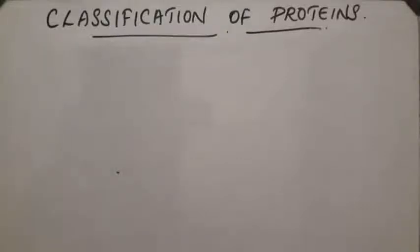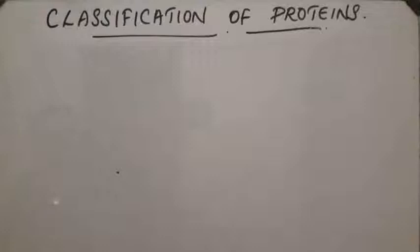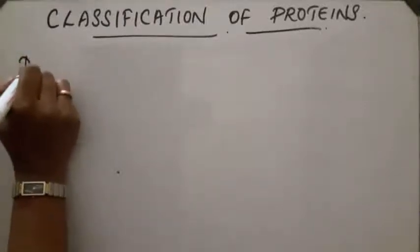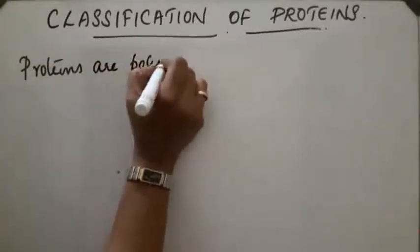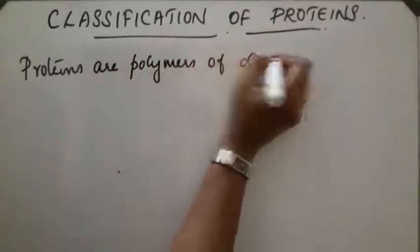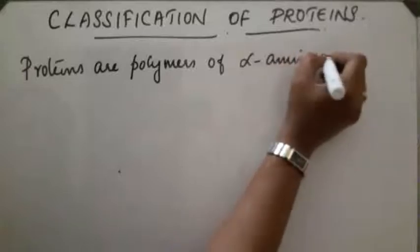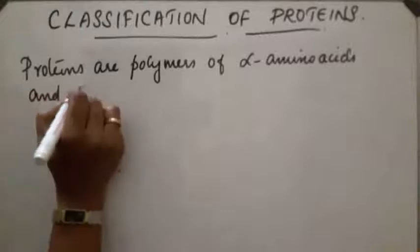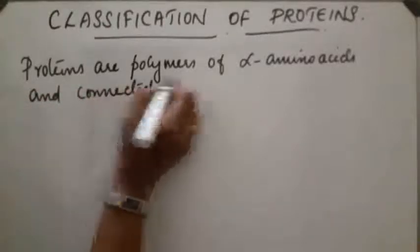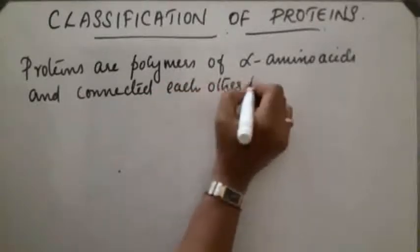Classification of proteins. In my last class I already discussed about proteins and the classification of amino acids. Here we are discussing about the classification of proteins. Proteins are polymers of alpha amino acids, which are connected to each other by peptide linkage.